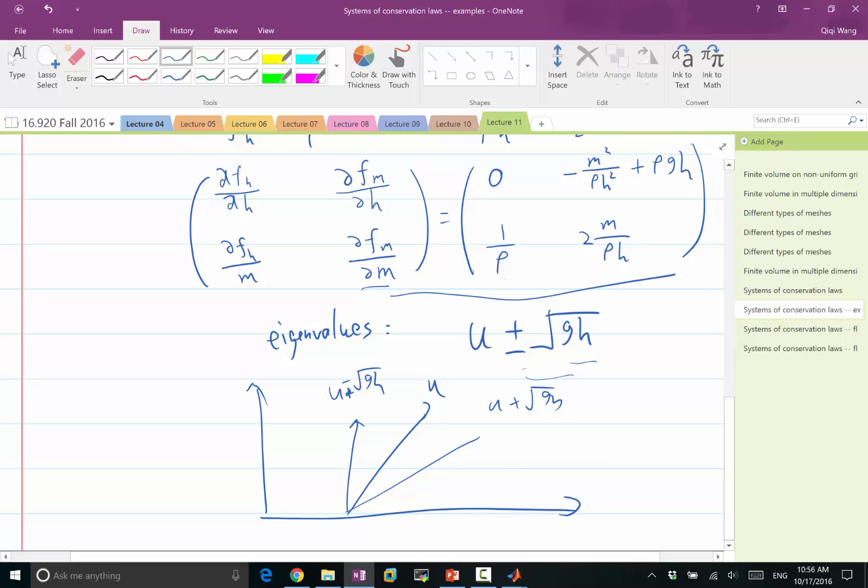And depending on the ratio of U to square root of GH, the flow can be either subsonic or supersonic. In the sense that if U is greater than square root of GH, if the magnitude of U is greater than square root of GH, then both characteristics propagate towards the same direction. If you put a perturbation somewhere, the perturbation would only propagate in one direction without going towards the other direction. If U has a magnitude smaller than square root of GH, then information actually goes towards both directions. And in nonlinear conservation laws, we are going to see situations like that all the time.